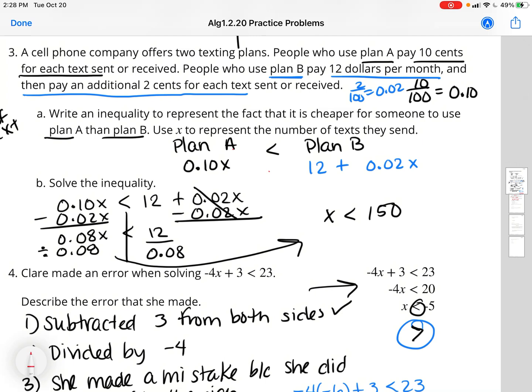So now I have 10 minus 2 is 0.08x and then 12 is by itself. Again, I want to get the variable by itself. So I'm going to divide by 0.08 from both sides. And I had to move over because I ran out of space.